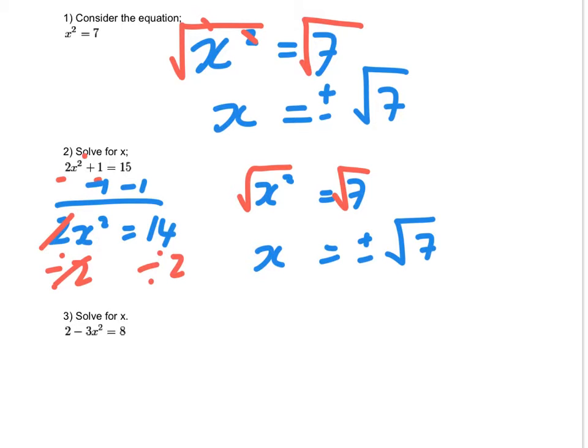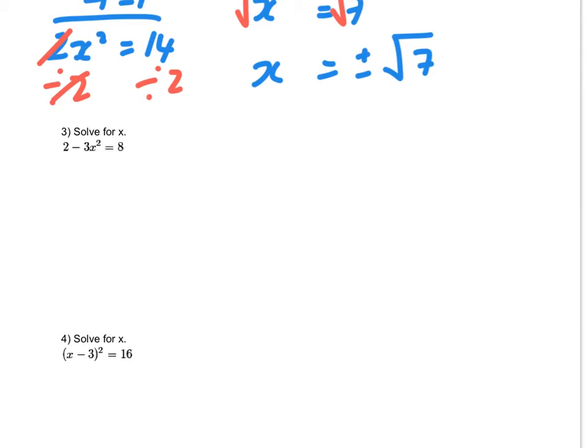The next one, 2 minus 3x squared equals 8. With this one here, we have to get the 3x squared on its own. So the 2 has to go, so we subtract 2 from each side. So we're just basically removing everything from around the x. We have to do it in a certain order. So that's going to leave you with minus 3x squared equals 6. Then divide by minus 3, that's going to leave you with minus x squared equals 2.